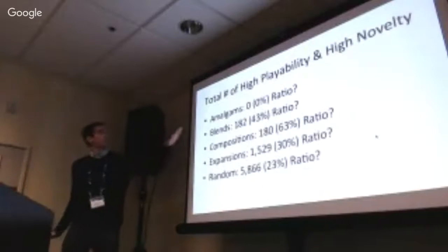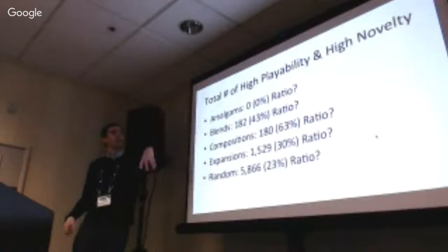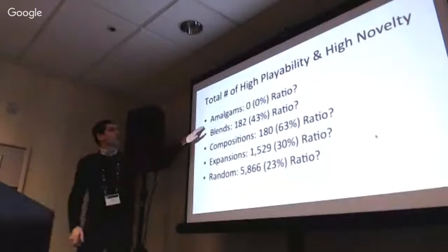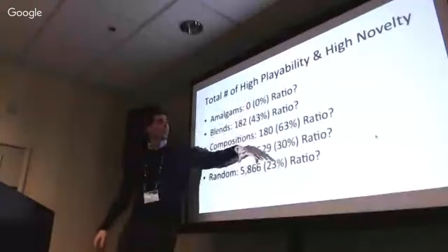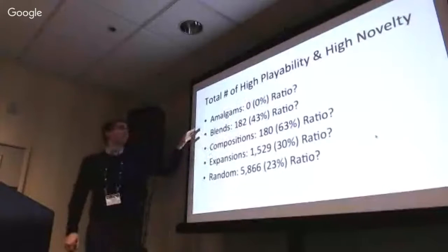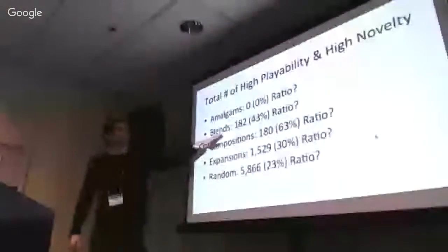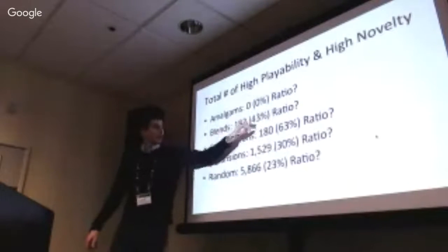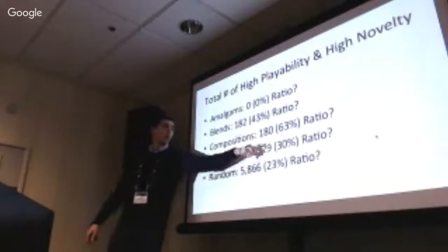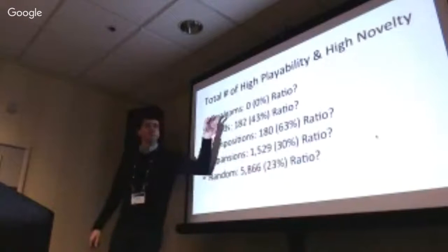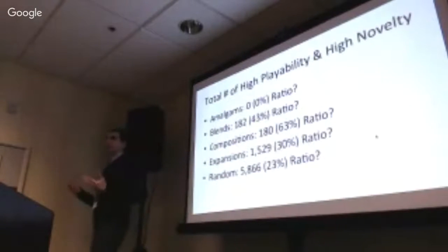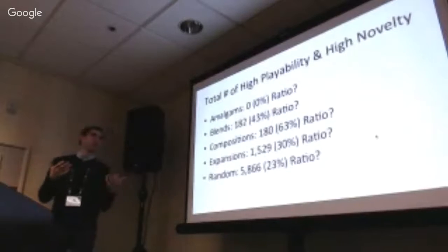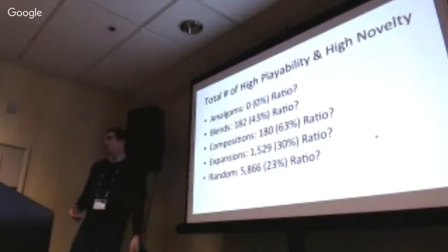For high playability and high novelty — defined as greater than 0.5 for both normalized values — amalgams have a very low percentage, blends slightly higher, compositions slightly higher still. Expansions give a lower percentage of high playability and high novelty items, but you get way more of them. Random gives the fewest proportionally except for amalgams, but there are way more total. If you were going to combine randomly, you'd have to do significantly more search to find anything worth doing, so these approaches do have benefits over random combination.